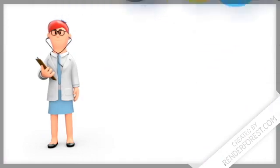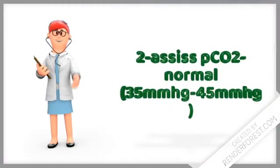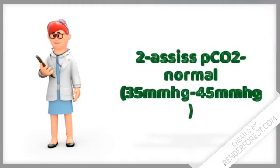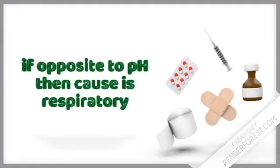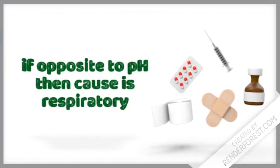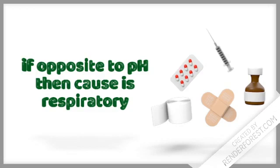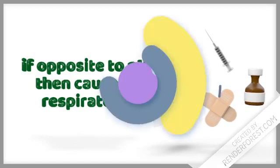Next, you have to assess the pCO2 value. The normal pCO2 value is 35 to 45 mmHg. You have to see if it is same as pH or opposite to the pH. For example, if the pH increases, that is alkalosis, but the pCO2 decreases, then you can say the cause is respiratory, and vice versa.